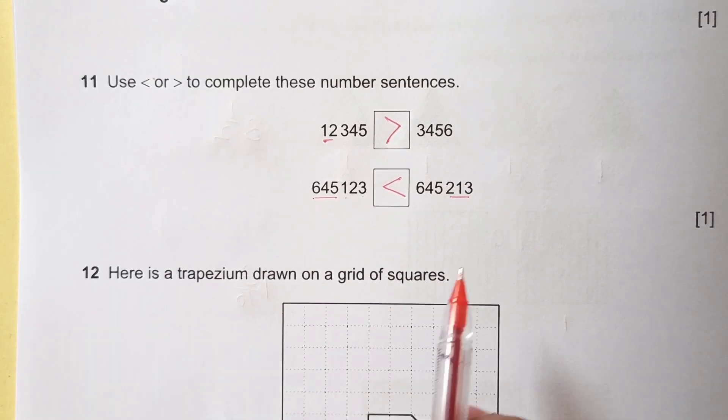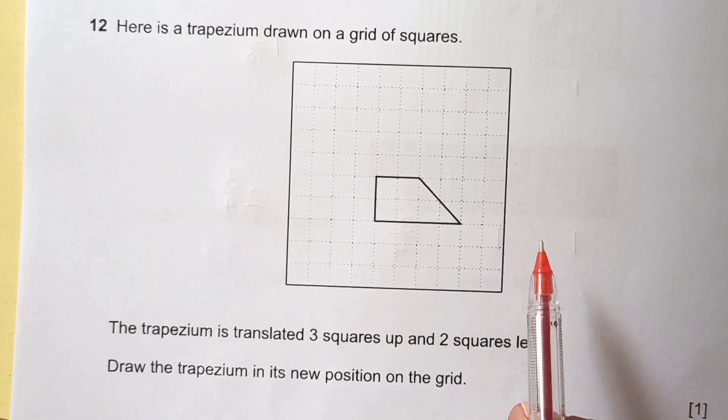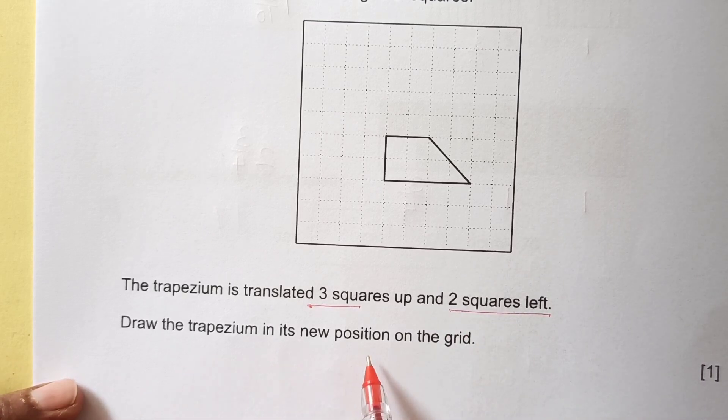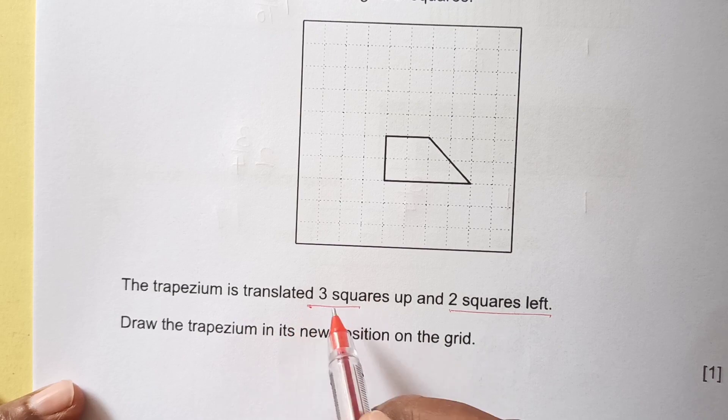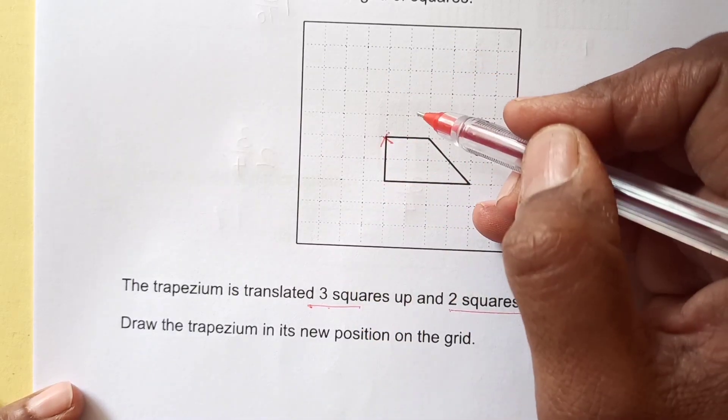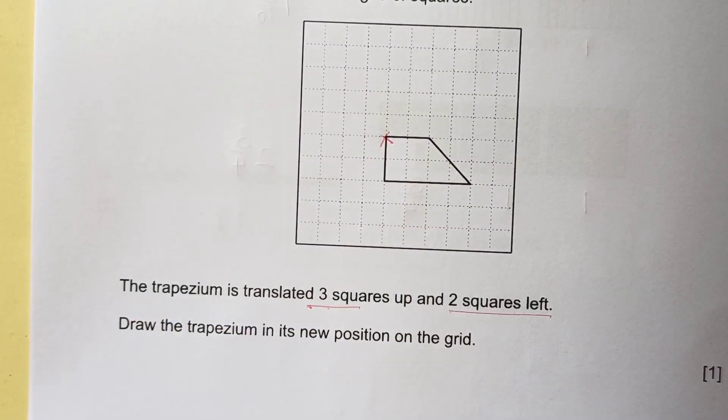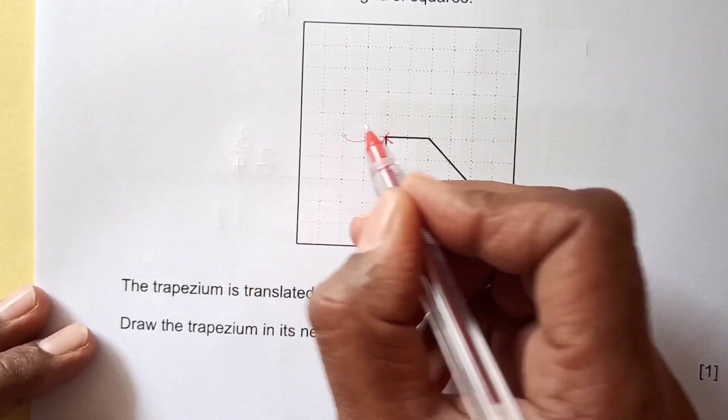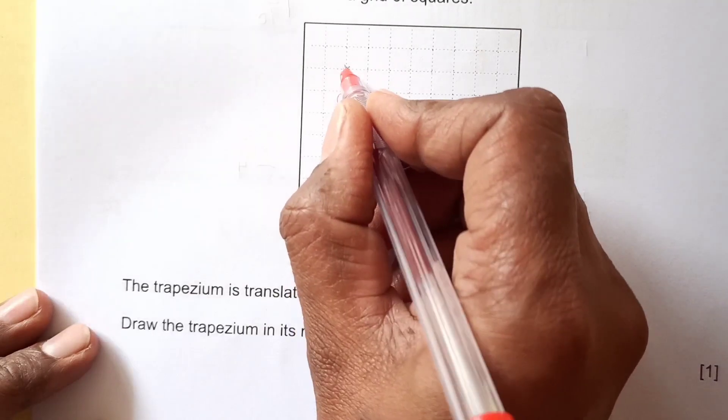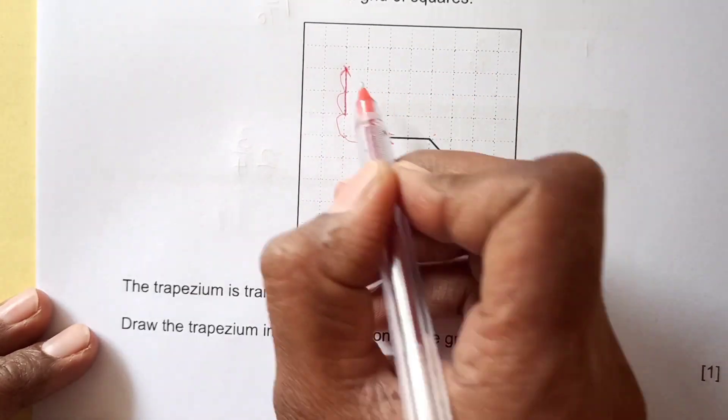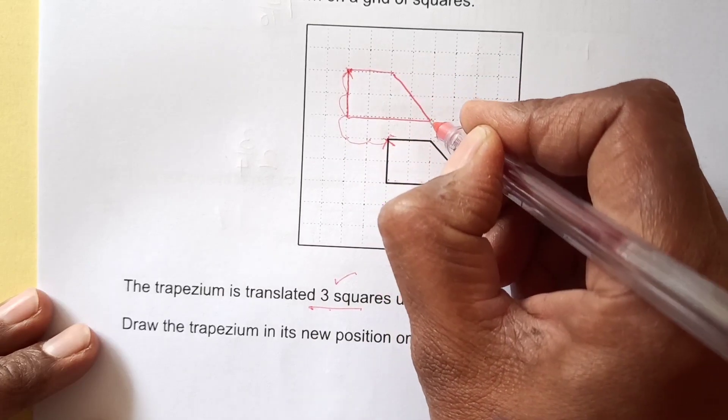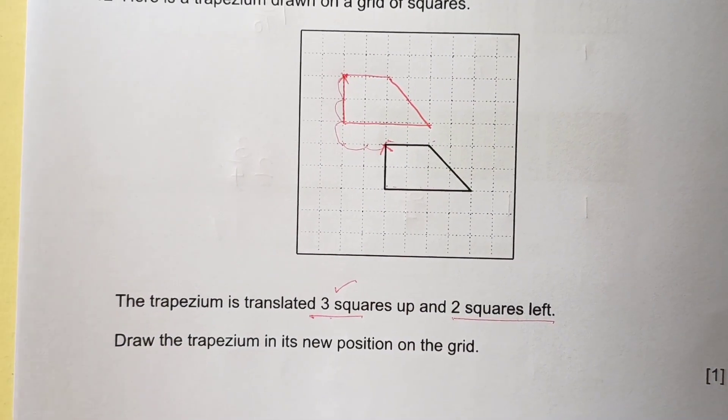Here is a trapezium drawn on a grid of squares. The trapezium is translated 3 squares up and 2 squares left. Draw the trapezium to its new position. I will go first 2 left here: 1 and 2, then 3 squares up: 1, 2, 3. That means this corner, this corner is here. Then 2 down here we will have this one. This side too. And we have 1, 2, 3, 4 here. So this is the translated shape. Please use ruler for this one.